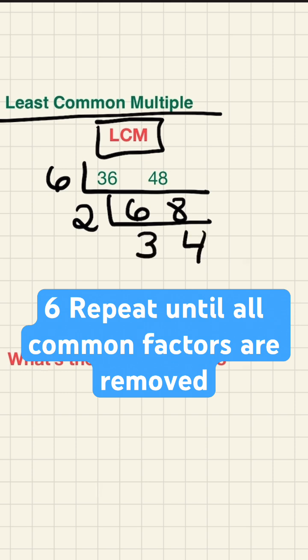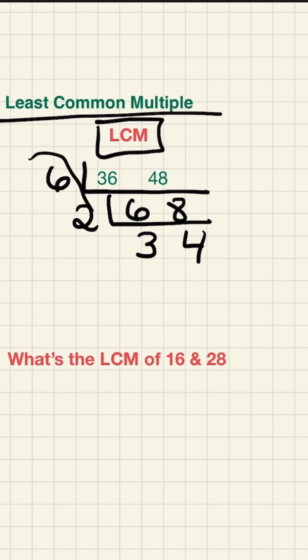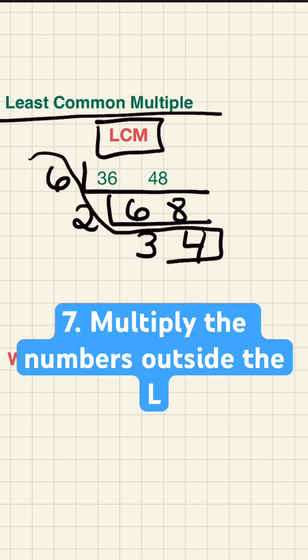Now that all those common factors have been removed, I'm going to multiply the numbers on the left of the L. So we have 6 times 2 times 3 times 4. That's my LCM.